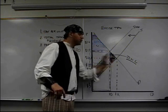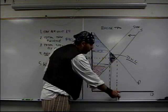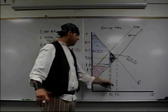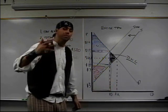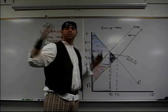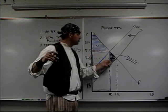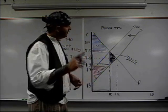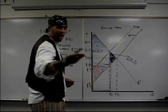So the supply curve shift to the left, this quantity ten is produced, the quantity twelve is no longer produced. So the eleventh and the twelfth units that people used to buy and the producers who used to sell them no longer are being produced. And so the consumer and the producer surplus from those units are gone. Deadweight loss. Until next time.